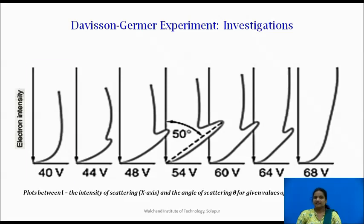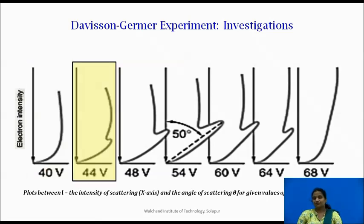It was found that at 40 volt the graph is smooth. Then a hump appears in polar curve when 44 volt electrons were incident on the crystal.